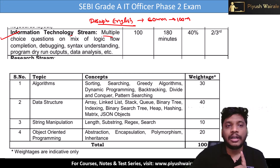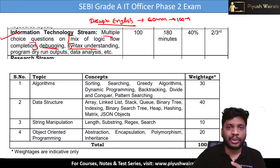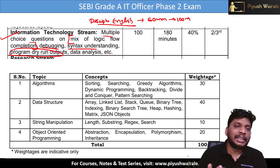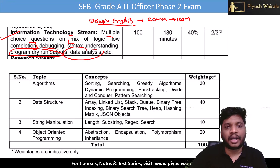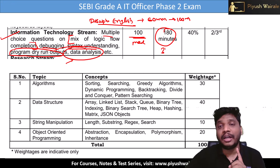Multiple choice questions cover a mix of logic flow, completion, debugging, and syntax understanding. They can use code in Python or C++ where you need to find errors. There is also program dry run output — they give pseudo code or Python code and you need to find the output. It is a 100-mark exam for 180 minutes — a three-hour paper.